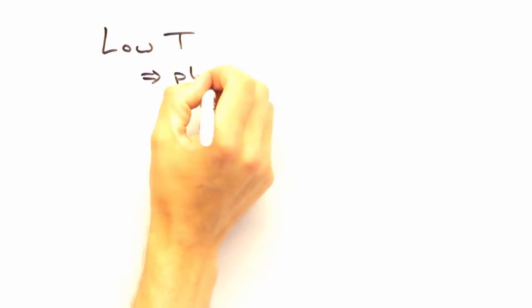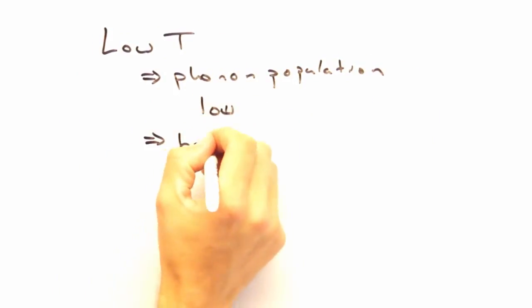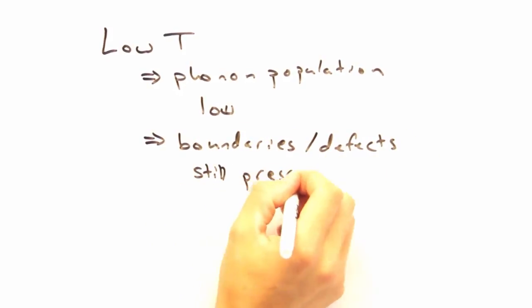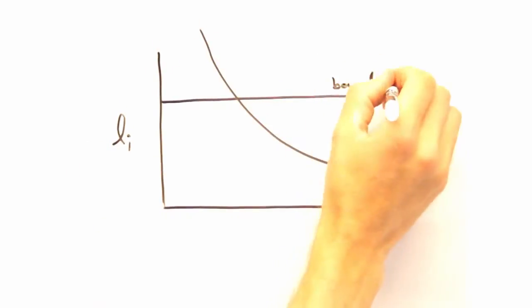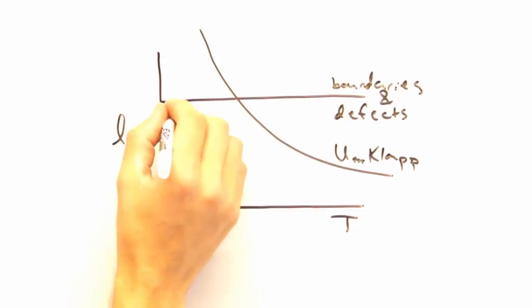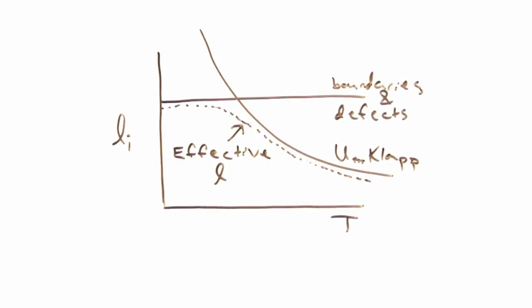At low temperature, though, we really only see boundaries and defects and get a constant mean free path, provided the boundaries and defect concentrations don't change much with temperature. Yeah, that's a good point. And we can plot the mean free path for each scattering source as well as the net mean free path as a function of temperature.